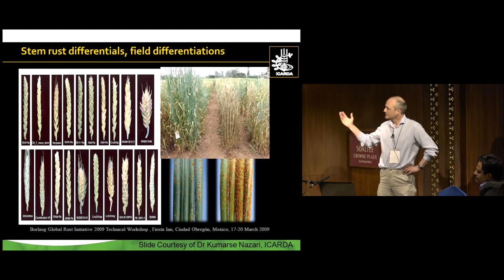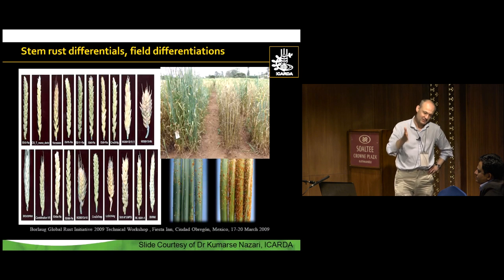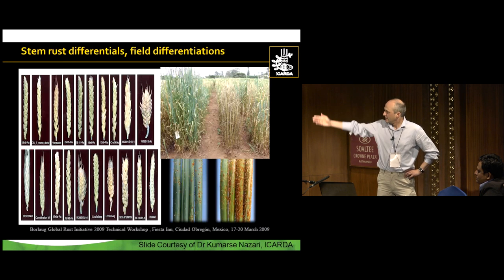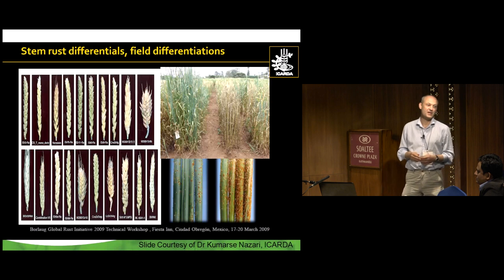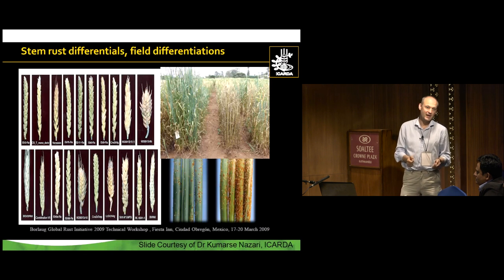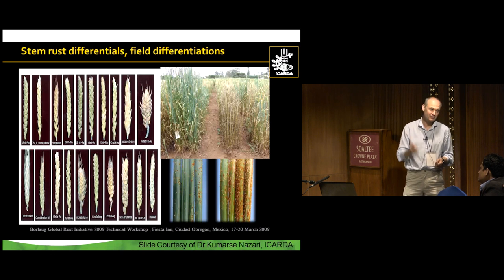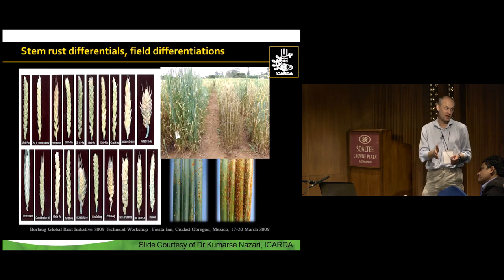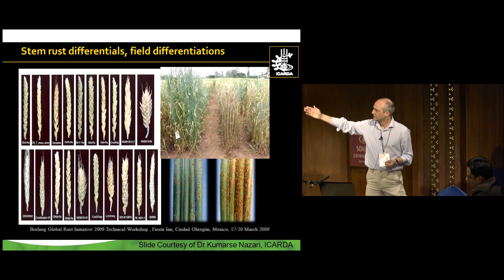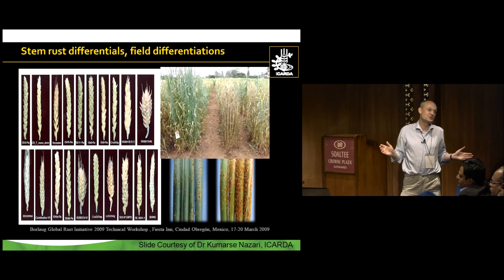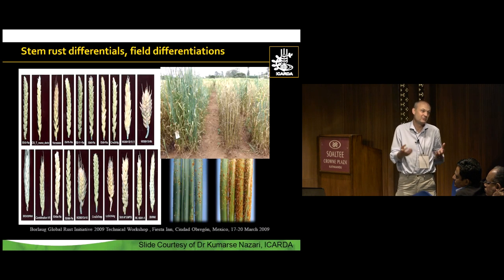One of the things with trap plots is the purity of the lines that you use. Dr. Eugene from the Cereals Disease Lab in Minnesota put together a very nice photo series for the stem rust differentials used in trap plots. You can use this to confirm that the line you're looking at in the field actually corresponds to the seed source. If you're seeing an entry where the head type is totally different, you pretty much ignore that trap nursery. If things are mixed up, the information coming from that trap plot is just going to be bad information.